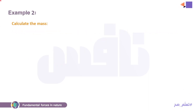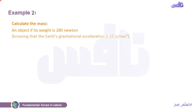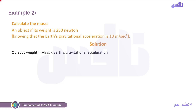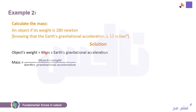Another example: Calculate the mass of an object if its weight is 280 newton, knowing that the earth's gravitational acceleration is 10 m/s². هنا طالب مني الماس. من الرول: object weight = mass × earth's gravitational acceleration. يبقى mass = objects weight ÷ earth's gravitational acceleration = 280 ÷ 10 = 28 kg.